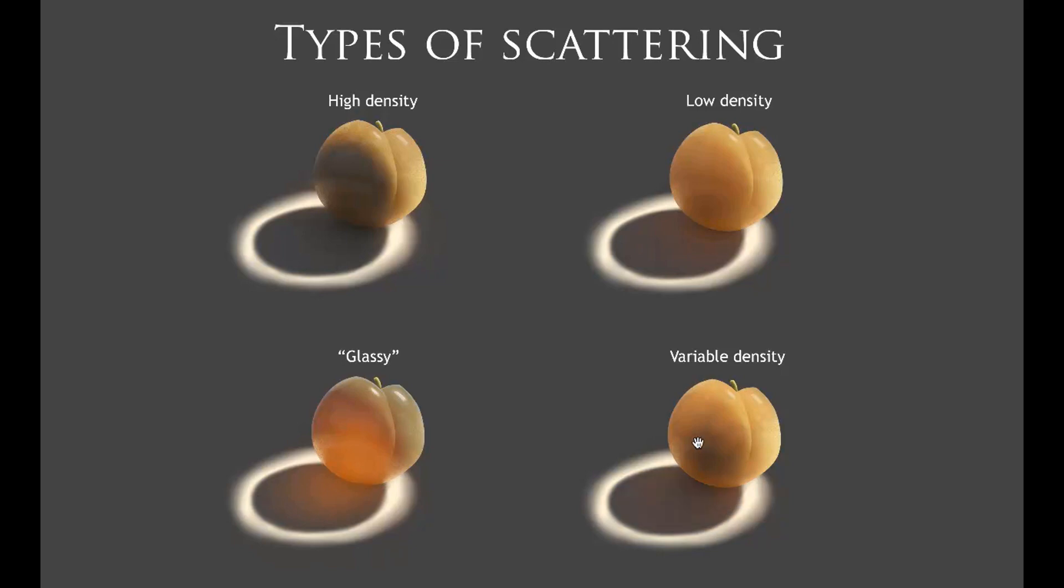With a variable density surface, whatever is changing that density needs to be reflected in the shadows. If it goes glassy, it's going to have a caustic effect. If it goes to low density or high density, then you are going to have the appropriate amount of light transmitting through it. And because variable density can get so complicated, I want to show an example that can help break this down and make it a little bit more easy to figure out.